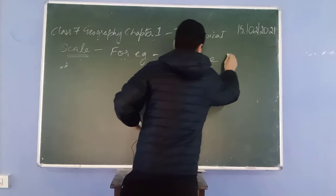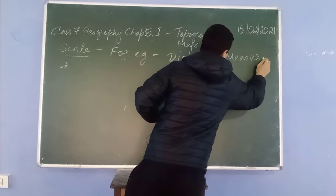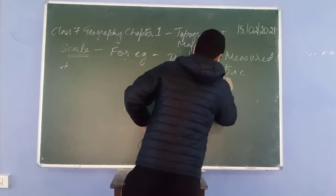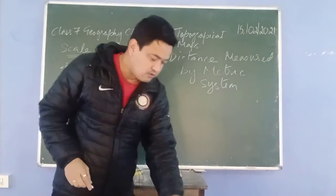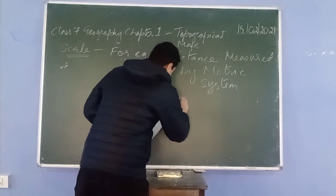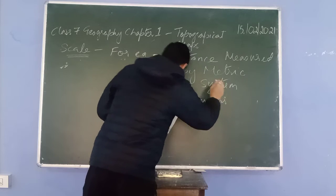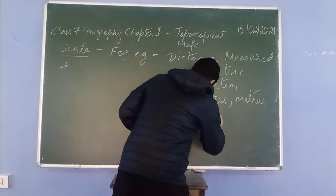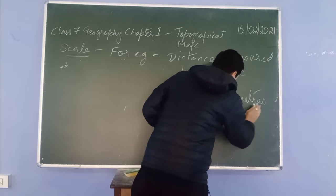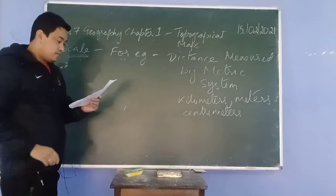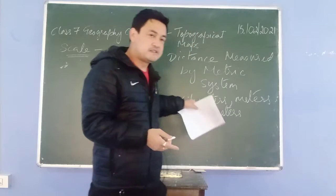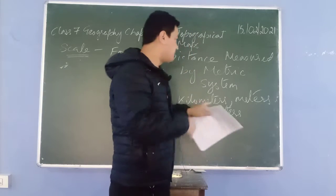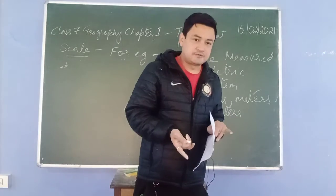Distance is measured by the metric system. This system is known as kilometers, meters, and centimeters. It can also be in millimeters, decimeters, miles, foot, etc. Are you understanding?